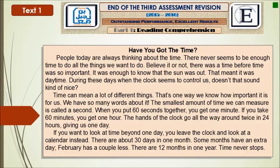There are about 30 days in one month. Some months have an extra day. February, for example, has a couple less. There are 12 months in one year. Time never stops. That was our text. Let's move now to the questions.